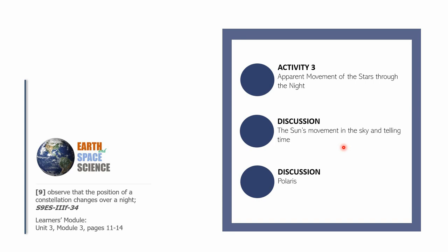And so for this session, we only have one learning competency, learning competency number nine, which is observed that the position of a constellation changes over a night. So if you want to follow through with your Earth module, you can open it in Unit 3, Module 3, pages 11 to 14.